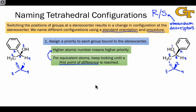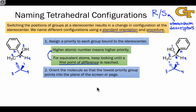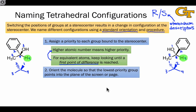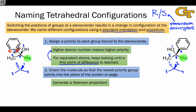Once we've done the prioritization step, the next step is to place the molecule into a standard orientation. By convention, the standard orientation involves placing the lowest priority group in the back, pointing away from us or into the screen. In orienting the molecule this way, we're really generating a Newman projection, looking along the bond between the stereocenter and the lowest priority group.